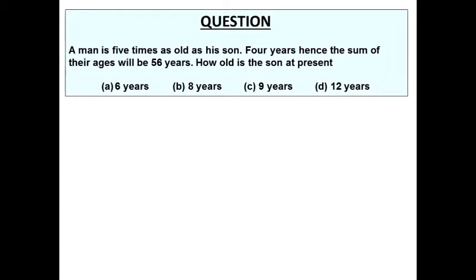A man is five times as old as his son. Four years hence, the sum of their ages will be 56 years. How old is the son at present? The relation between the ages of son and father is given; we need to find out the present age of the son. Four options are also given. Let us solve this question and find out how we can crack it.